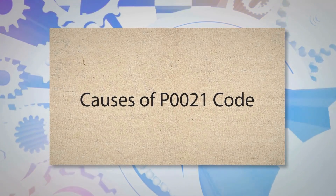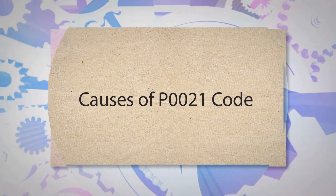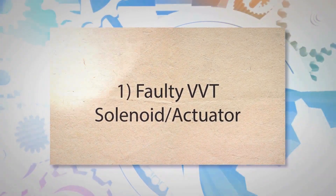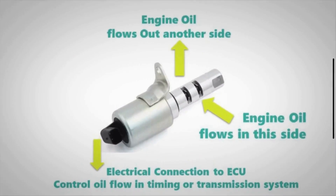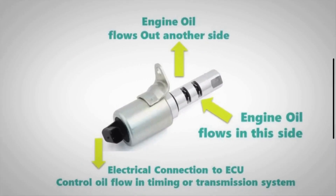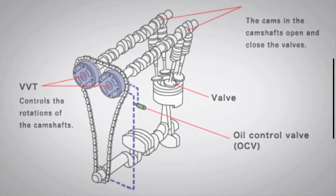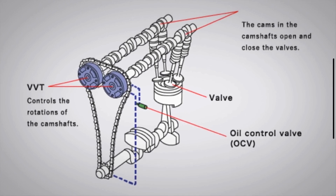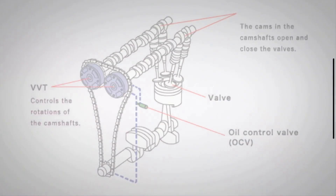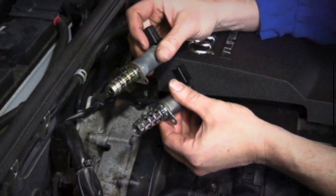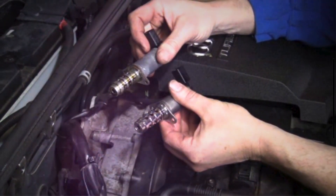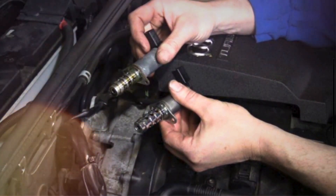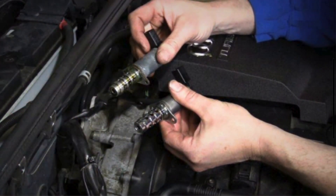Cause 1: Faulty VVT solenoid/actuator. The variable valve timing solenoid controls the flow of oil to the VVT system. If the solenoid fails, it can cause the camshaft to advance more than it should, leading to the P0021 code. The failure can be due to internal electrical faults, clogging from dirty oil, or mechanical failure.